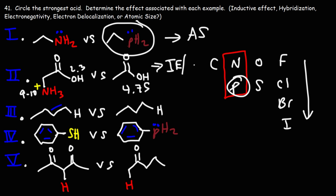The secondary reason is electronegativity. Because nitrogen is electronegative, it can pull electrons by means of the inductive effect. On a test, I would pick inductive effect over electronegativity. If the inductive effect wasn't an option, then I would pick electronegativity.